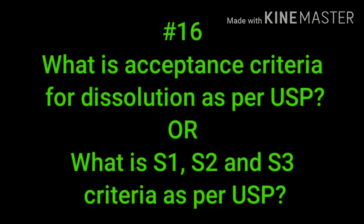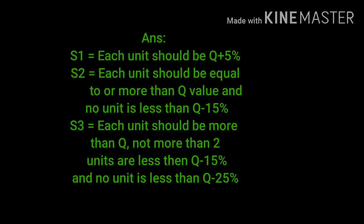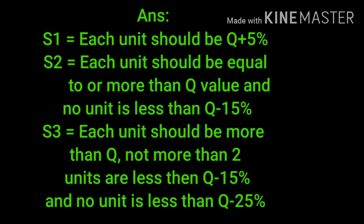What are the S1, S2, and S3 acceptance criteria as per USP? For S1, each unit should be Q+5% or more. For S2, each unit should be equal to or more than Q, and no unit less than Q−15%. For S3, no more than two units are less than Q−15%, and no unit is less than Q−25%.